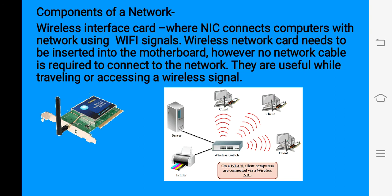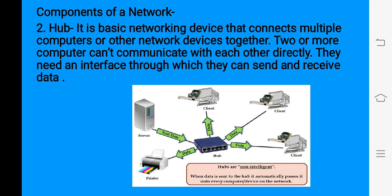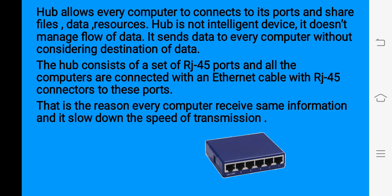As you can see in this picture, every computer has a wireless interface card and through that they are connecting to the switch and can share information. Next is hub. Hub is also an important networking device that connects multiple computers and also connects computers of other networks. Two or more computers cannot communicate directly — they need a hub. All the computers are connected with the hub, and then they can send and receive data.